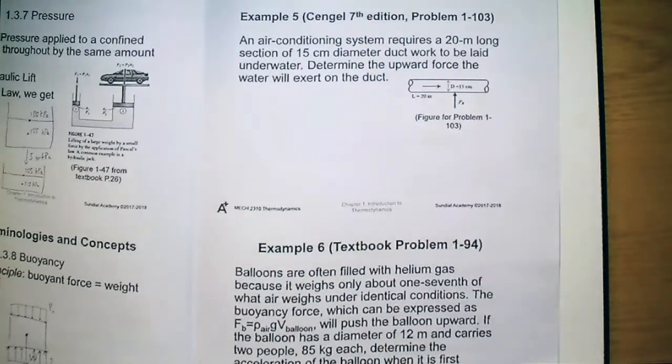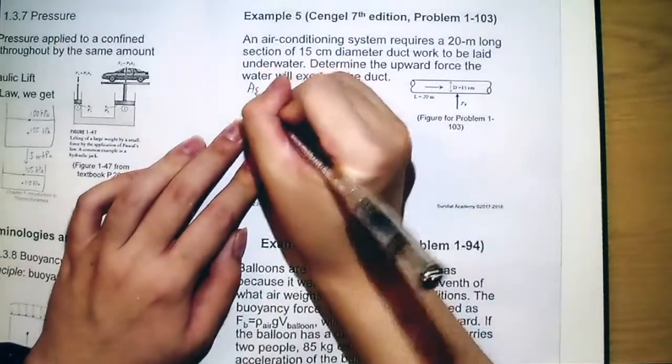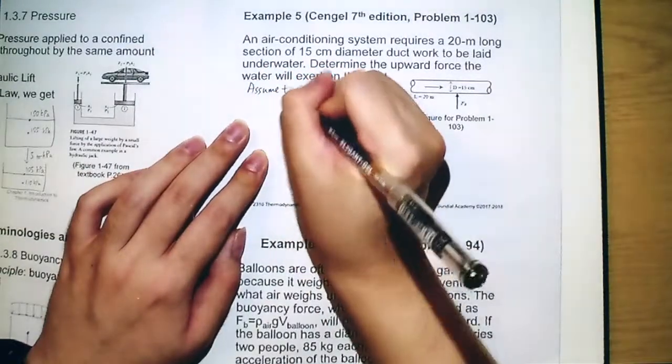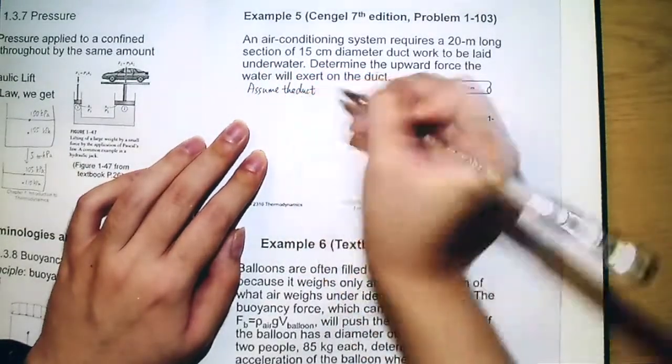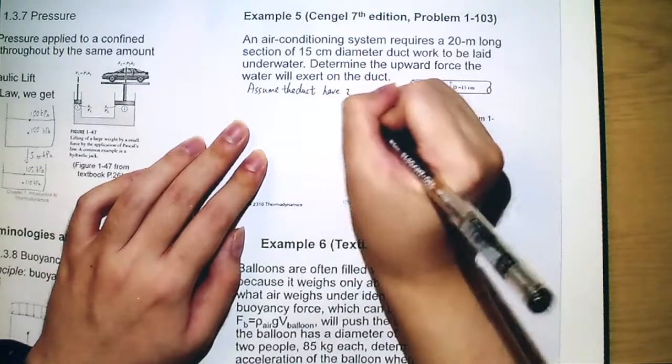Okay, so here is the schematic of this situation. We will make some assumptions because we are only given one diameter, but we don't know whether it's an inner diameter or outer diameter, so we will just assume that the duct has zero thickness.